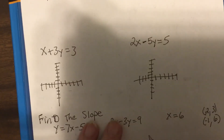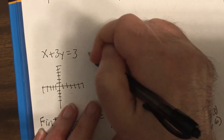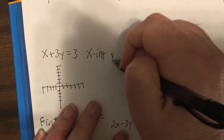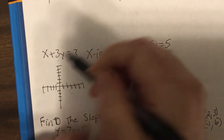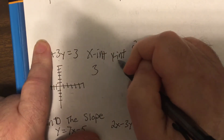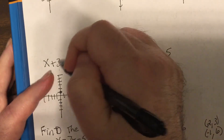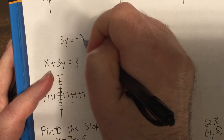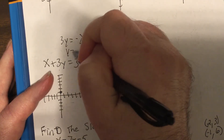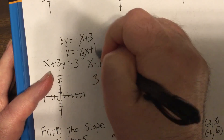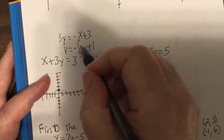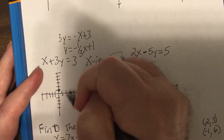Do those two: find the x and y intercept and then graph it. The x-intercept: put zero in for y, x is three. Y-intercept: put zero in for x, solve it, divide by three, so it's one. Actually it says find slope and y-intercept, so I've got the y-intercept. To find the slope, subtract x and then divide by three — negative one-third — so down one, right three, or up one, left three.